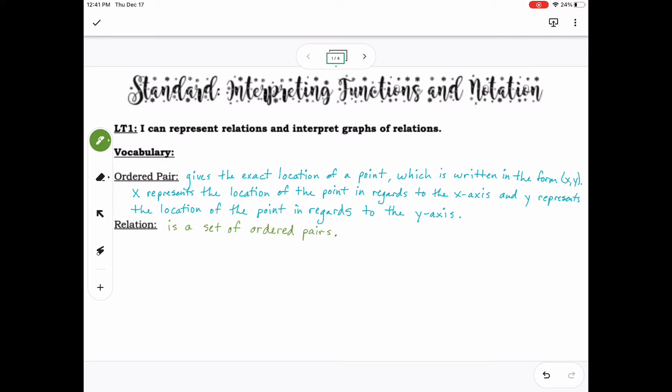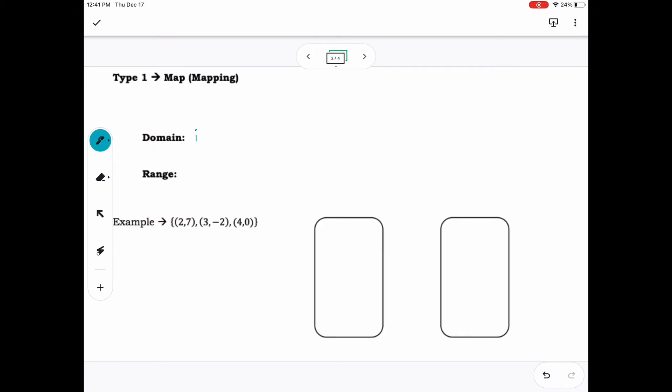On the next slide, we will show the first way we can represent relations, which is by using a mapping. First, we must talk about what a domain and range is. A domain is all the x-coordinates in a relation. A range is all the y-coordinates in a relation.